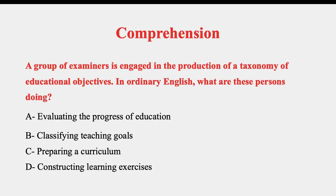At the comprehension level, here is an interesting question: 'A group of examiners is engaged in the production of a taxonomy of educational objectives. In ordinary English, what are these persons doing? (1) Evaluating the progress of education; (2) Classifying teaching courses; (3) Preparing curriculum; (4) Deconstructing learning exercises.' If you know what taxonomies and educational objectives are, you will easily find the correct answer.